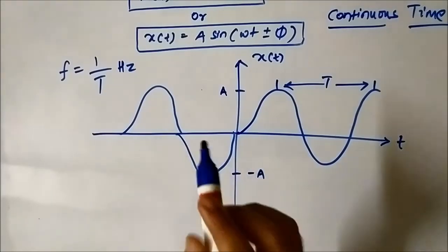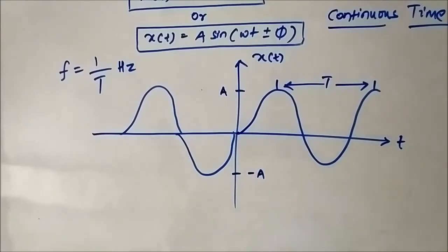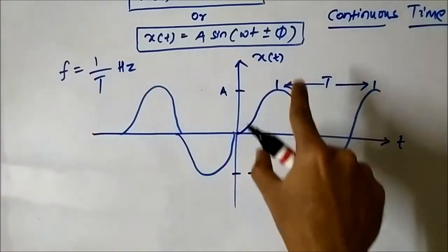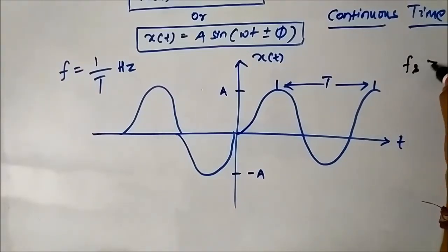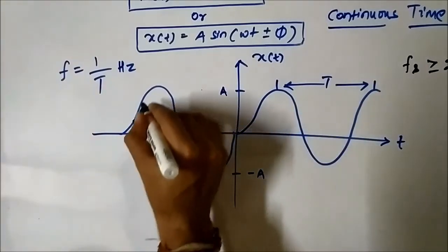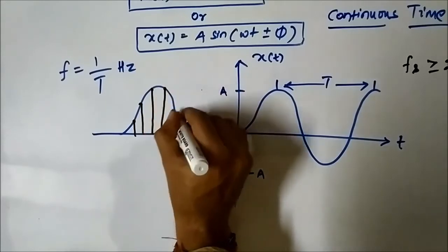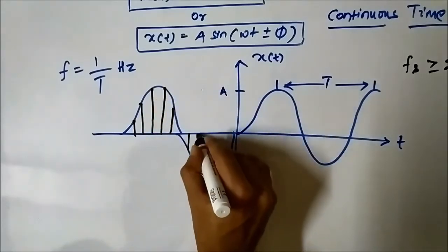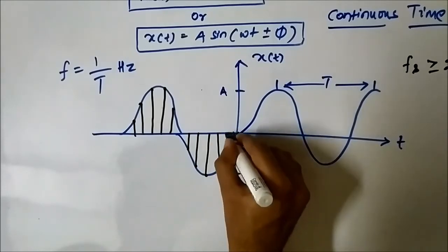Now, the process of conversion of a continuous time signal into a discrete time signal: we take samples of the continuous time sinusoidal signal following the sampling criteria — the Nyquist sampling theorem — which states that the sampling frequency must be greater than or equal to twice the maximum signal frequency. Taking samples of the sinusoidal signal at equidistant points gives us equal intervals.